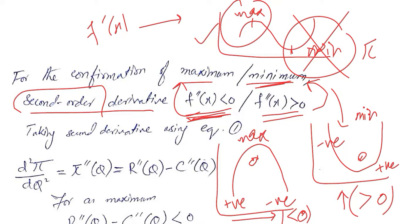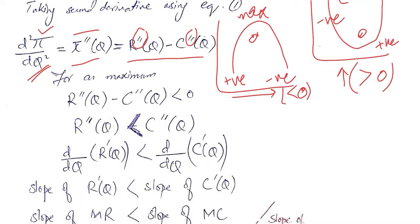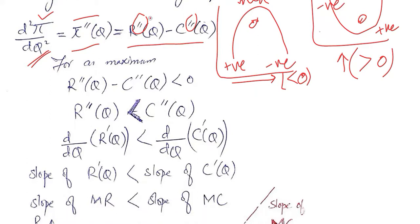Coming back to the main objective of seeing how profit can be maximized, we take the second order derivative because it guides us about whether we are going towards a maximum or a minimum. This second order derivative is straightforward — the difference rule is applied again to take the second order derivative instead of the first. For a maximum, the second order derivative must be negative.